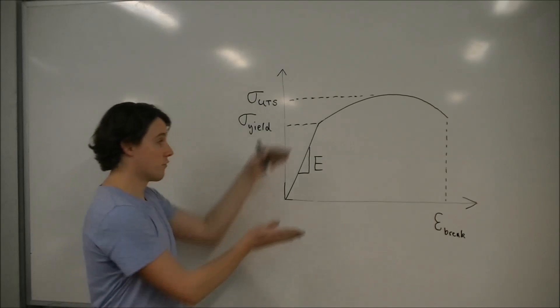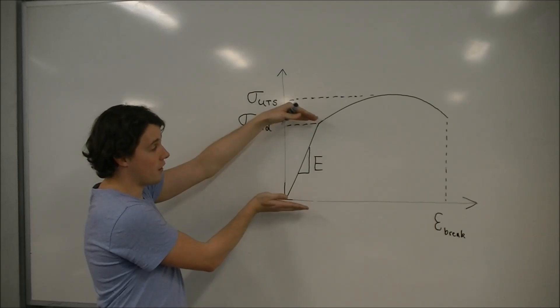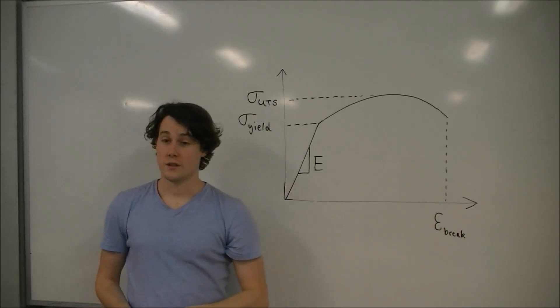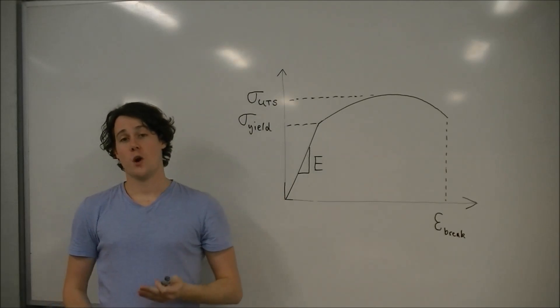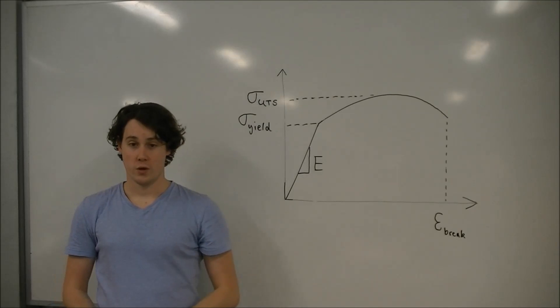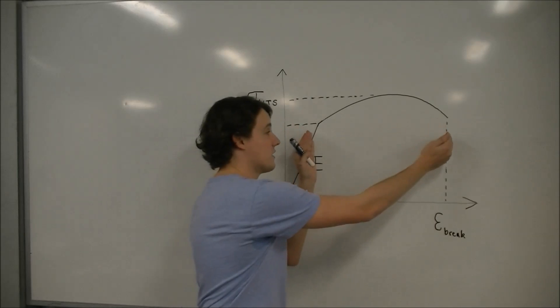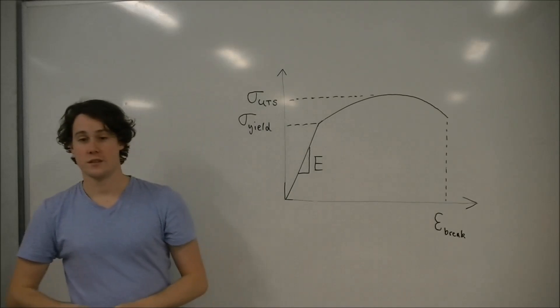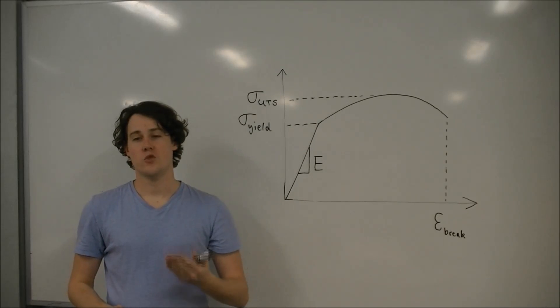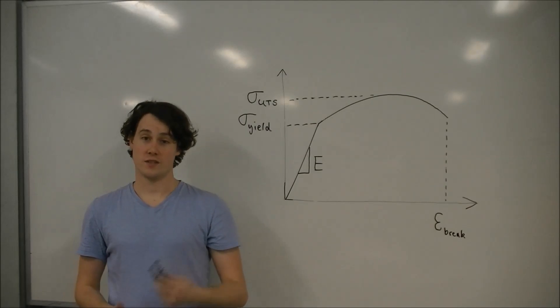Modulus is calculated from the elastic part of the curve before yielding where the material deforms only from stretching the atomic bonds. Tensile strength, toughness and elongation to break are all calculated from the plastic part of the tensile curve after yielding. In this region it is the movement of dislocations that governs deformation.